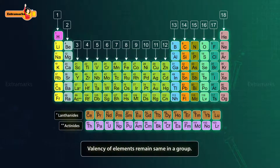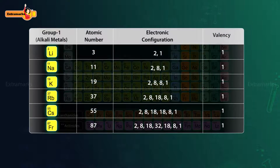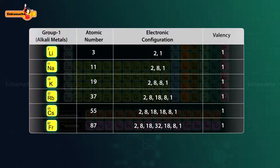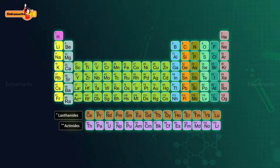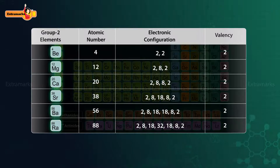In a group, the valency of all elements remains the same. Consider the alkali metals of group 1. From lithium to francium, all the elements have one electron in their outermost shell, meaning the elements have one valence electron. Therefore, the valency of all these elements is equal to 1. Similarly, in group 2 elements, the number of valence electrons is 2, so the valency of elements of group 2 is equal to 2.